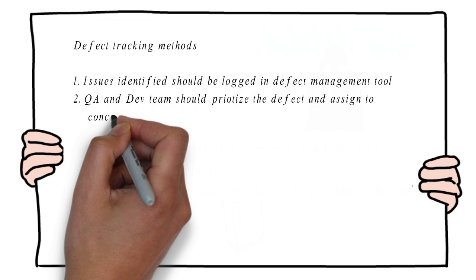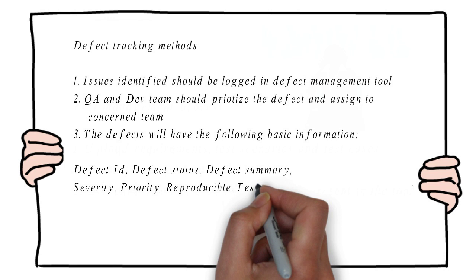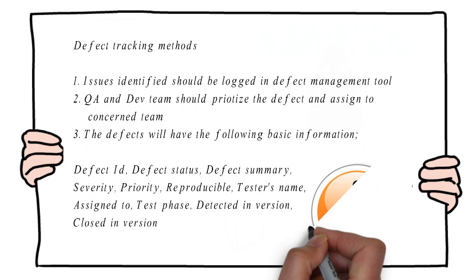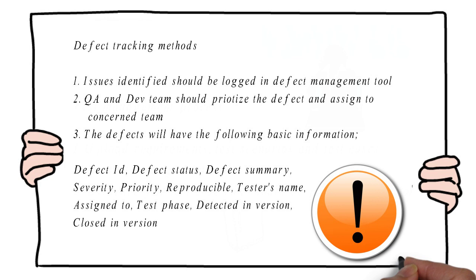The next component is defect tracking methods. Here, details about defects and how they can be tracked properly would be defined. The issues identified by the testers need to be logged in a defect management tool so the dev team can review them. There should be a communication process, and defects should be prioritized and assigned to the concerned team. The defect will have basic information: a defect ID, defect status, defect summary, severity and priority, tester name, which team it is assigned to, the phase where the defect was detected, and the software version in which it is closed.